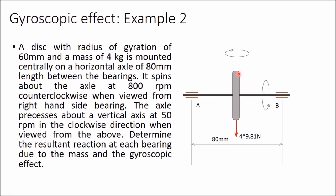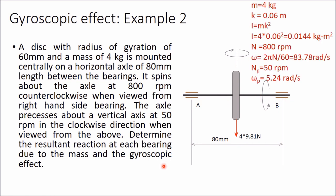The disc rotates anti-clockwise at 800 rpm when viewed from the right side. The axle precesses about a vertical axis at 50 rpm in the clockwise direction when viewed from above. This means the B part comes towards you and the A part goes away from you. We have to determine the resultant reaction at each bearing due to mass and gyroscopic effect.